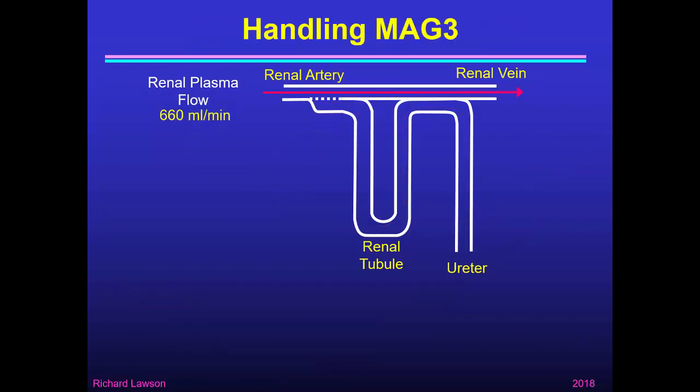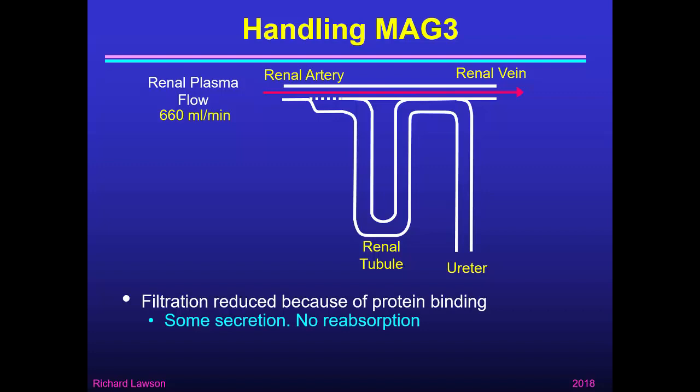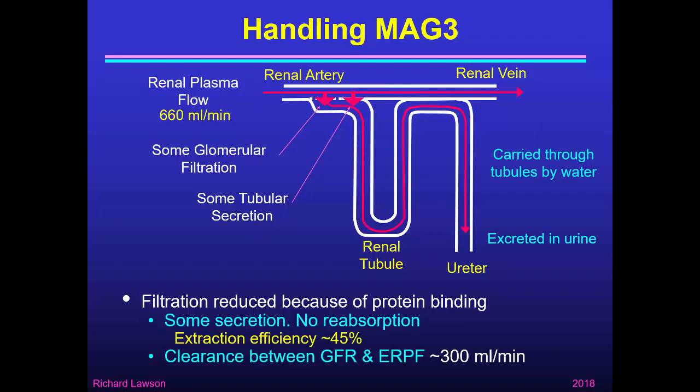MAG3 also enters the kidney at a rate equal to the renal plasma flow. It undergoes filtration, but has some protein binding so filtration is somewhat reduced. There is some secretion but no reabsorption, so it's filtered and secreted, then carried through the tubules by water and excreted in the urine. Its extraction efficiency of 45% is less than Hipuran but better than DTPA. So its clearance — about 300 mls a minute — is greater than the GFR of 120 mls a minute but less than the ERPF of 600 mls a minute. MAG3 can be labelled with technetium-99m to form a radiopharmaceutical suitable for renography, with an extraction efficiency better than DTPA but not as good as Hipuran.